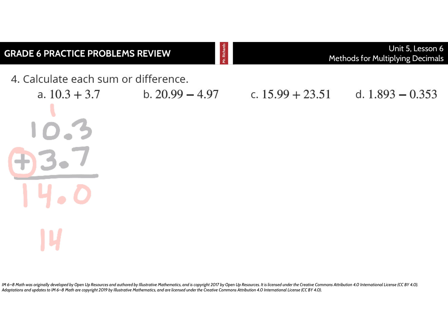Our next question, 20.99 minus 4, line up the decimal point, and 97 hundredths. Well, 9 hundredths minus 7 hundredths is 2 hundredths. 9 tenths minus 9 tenths is no tenths, zero tenths. And then, we can't take 4 ones away from 0 ones, we want it to unbundle this 10. 10 minus 4 is 6. 1 minus 0 is 1. And so, we end up with 16.02.